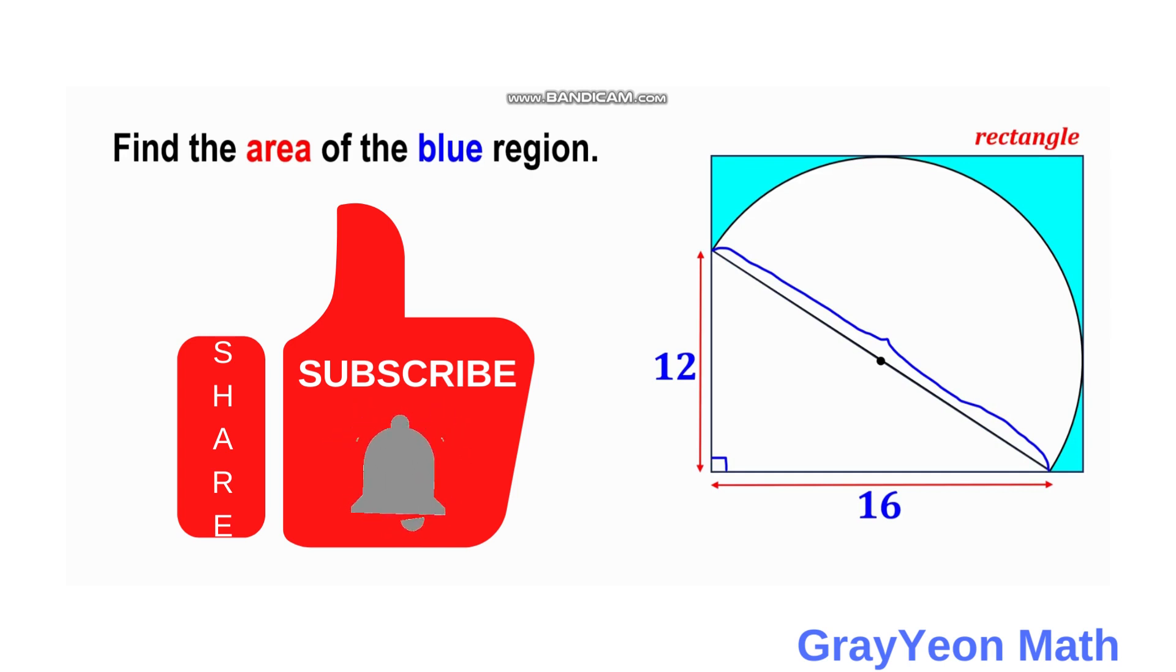Welcome to GrayYeon Math. We are asked to solve this problem. We have a semicircle and a right triangle inside this rectangle, and we are required to find the area of this shaded region.